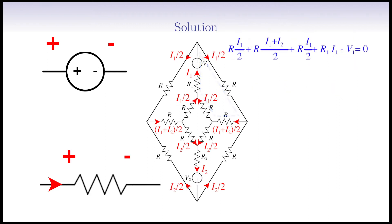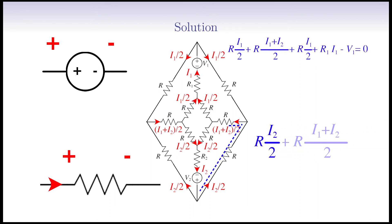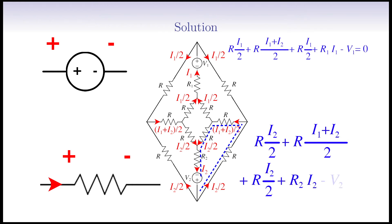We do the same process for the bottom loop. We get: R multiplied by (half I2), plus R multiplied by (I1 plus I2) divided by 2, plus R multiplied by (half I2), plus R2 multiplied by I2, minus V2, equal to 0.